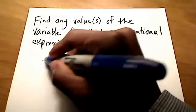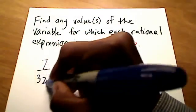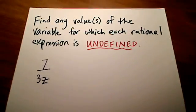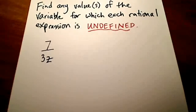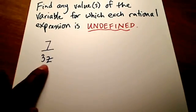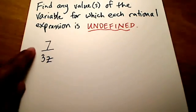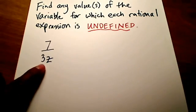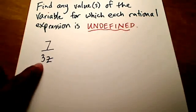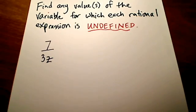Here's one. So I have 7 over 3z. 7 over 3z. And the question is, what value would this variable z have to be to make this expression, the whole fraction, undefined? Well, the only time this thing would be undefined is if my denominator is a zero. I just proved you that, showed you that a second ago, right?